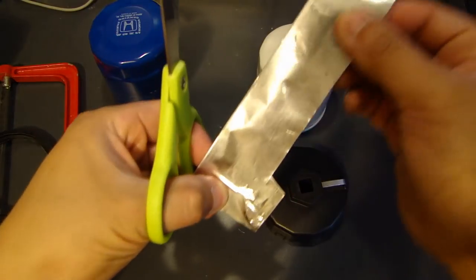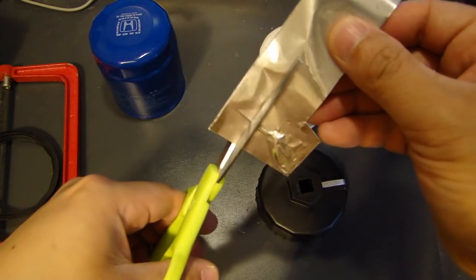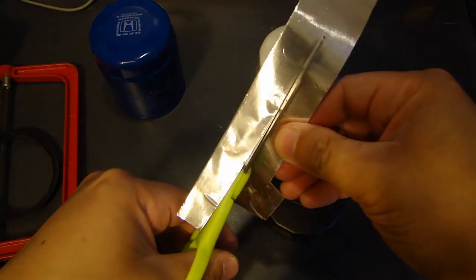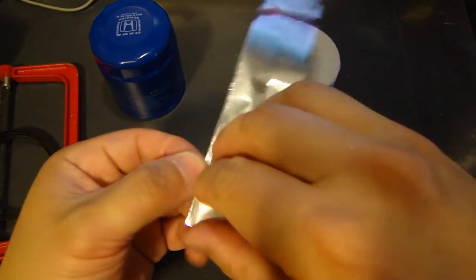So for example, here's a piece that I cut out, and I'll just show you. They're very easy to cut, and there's a sticky backing.